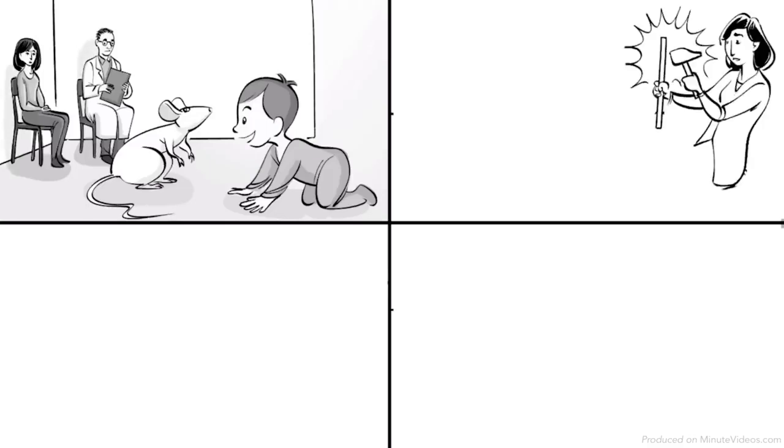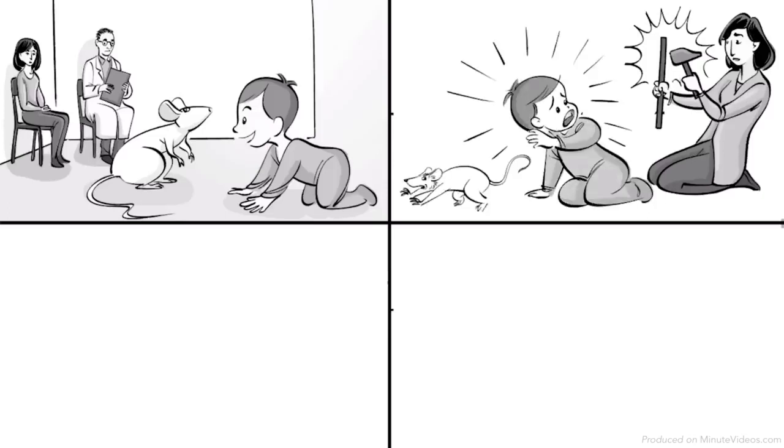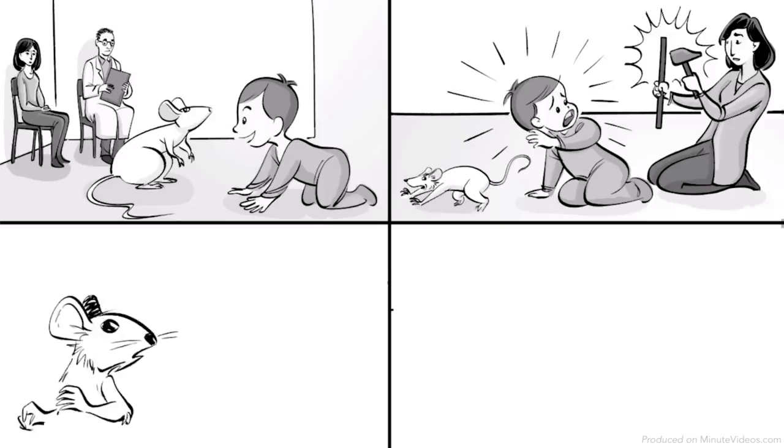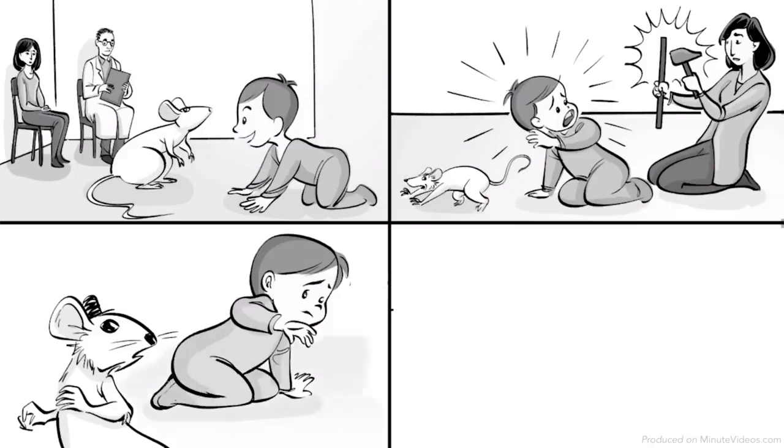Then, Rayner struck a steel bar with a hammer every time Albert reached out to touch the rat, scaring Albert and causing him to cry. Eventually, Albert tried to get away from the rat, showing that he had been conditioned to fear the rat.